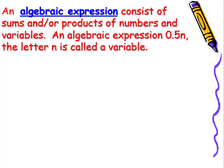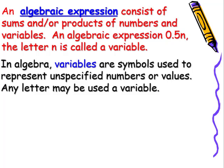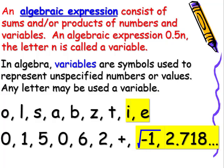An algebraic expression consists of sums and or products of numbers and variables. An algebraic expression, 0.5N, the letter N is called a variable. In algebra, variables or symbols used to represent unspecified numbers or values. Any letter may be used as a variable. Even though we can choose any letter, there are certain letters we try to stay away from. And the key word is try to stay away from. O looks like a zero sometimes.